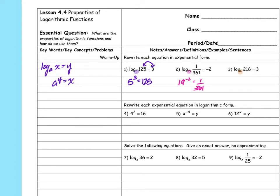Base six becomes the base of the exponent, so six to the third power equals 216. That's our first set. For the second set, we go backwards — we start with the exponent and convert to a logarithm. The same rule applies: the base of the exponent becomes the base of the logarithm, so I have log base four.